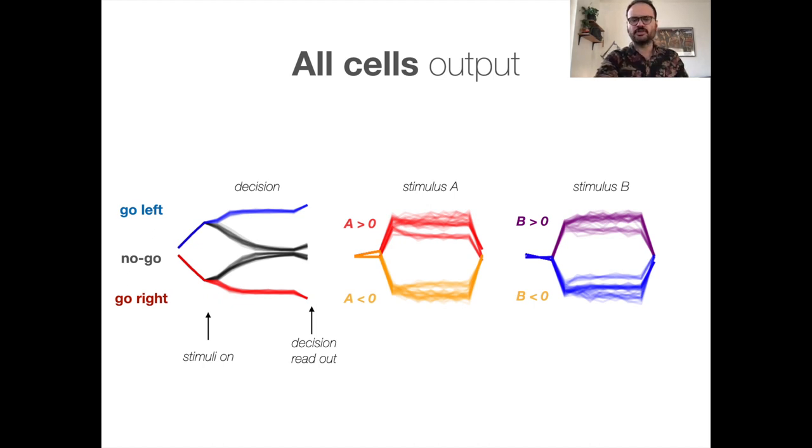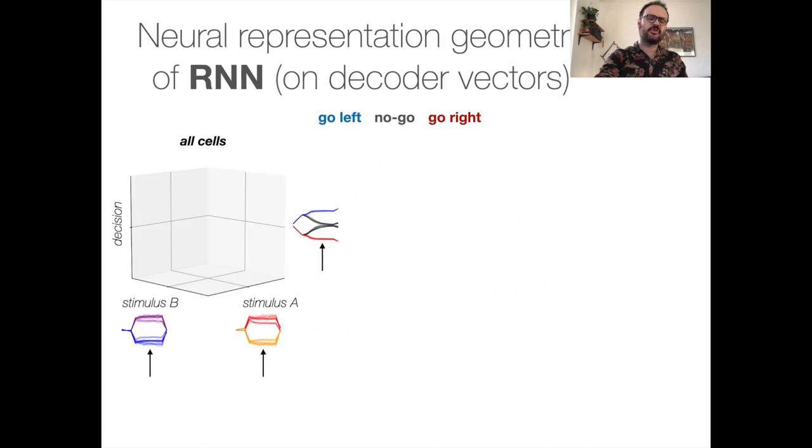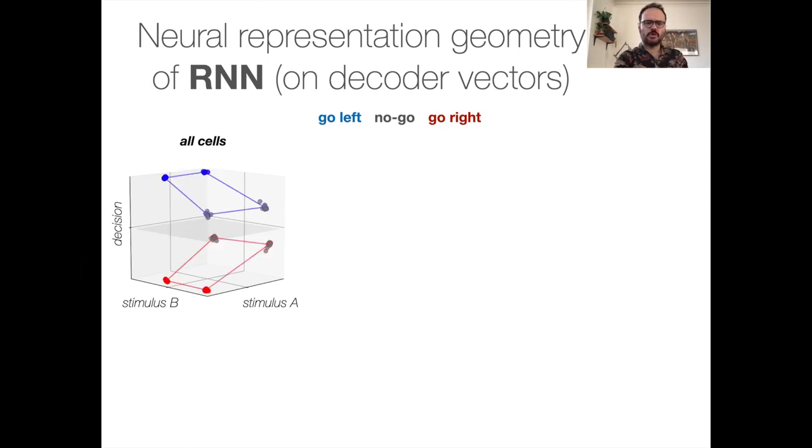So let's rearrange this in a 3D plot. In particular, I'm going to look at the activity during the stimulus at only one time point and project it on each of these axes. So this is a picture that emerges, so we can see that during each context, you can decode perfectly all the task variables: decision, stimulus A or stimulus B.